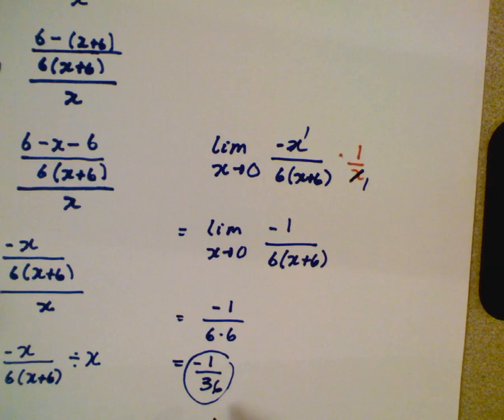So that's the limit as x is approaching zero of our original function, it is going to be negative 1 over 36. For any questions or comments please type them below guys and we will see you next time.